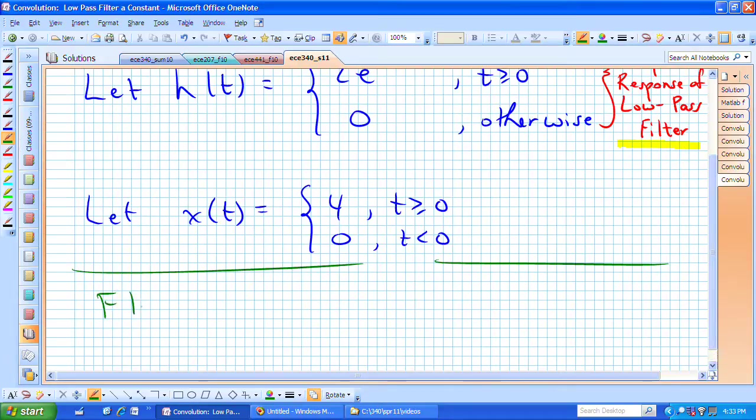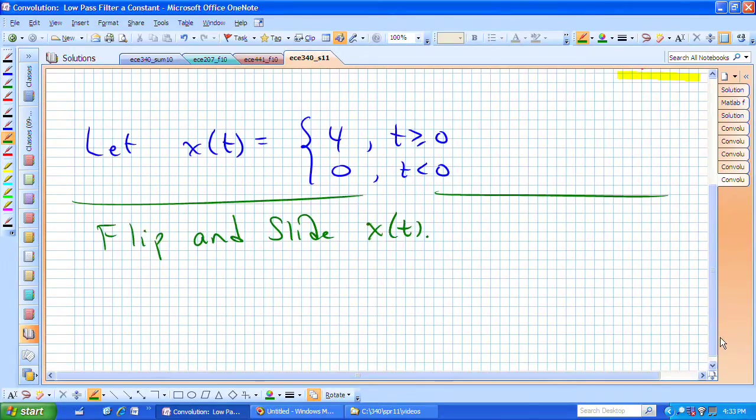Let's flip and slide x of t. First, let's define it as x of lambda. That's just this constant that turns on at lambda equals 0.